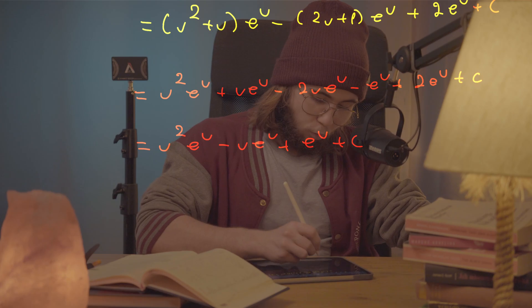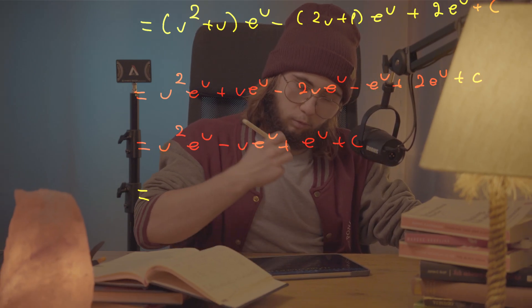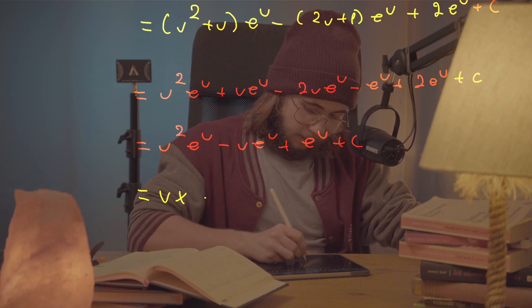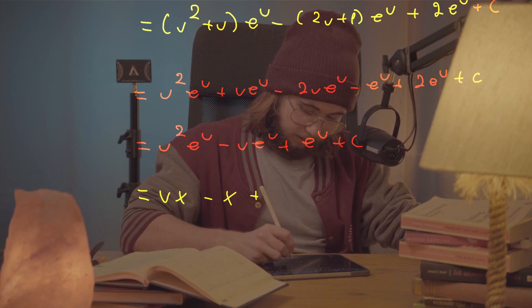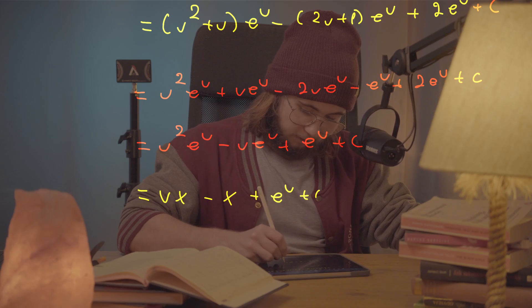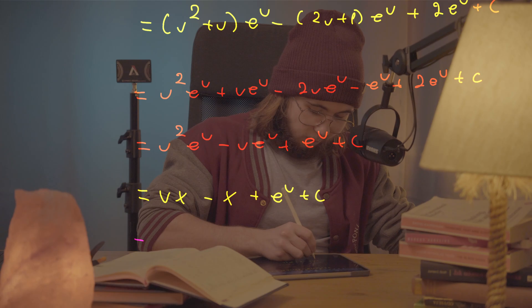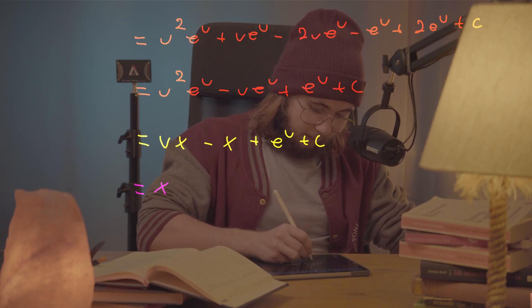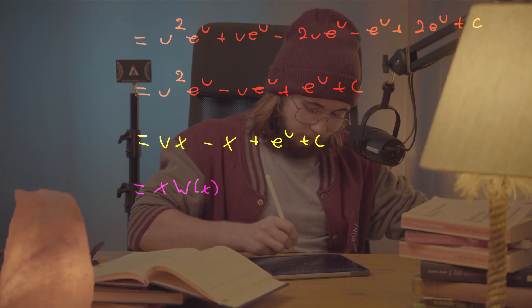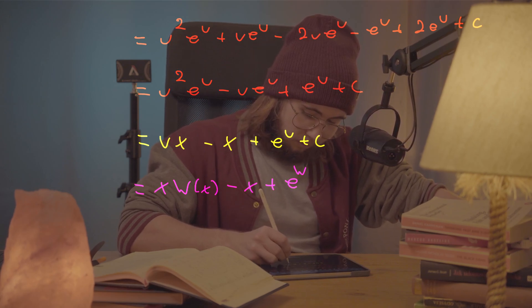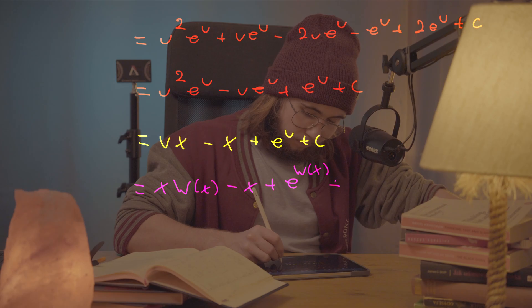So now recall that u times e to the u was x. And so we will get u times x minus x, and then plus e to the u and then plus c. But now what was u was just the W of x. And so we will get x times the Lambert W of x minus x, and then plus e to the W of x plus c.